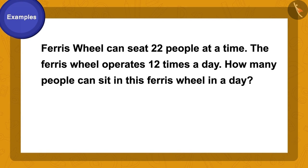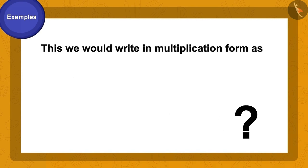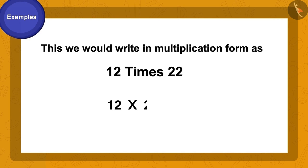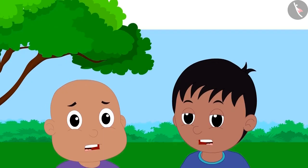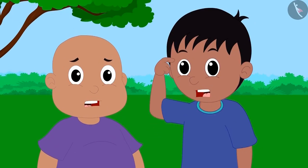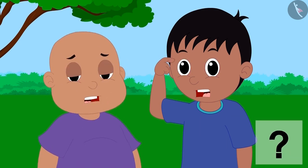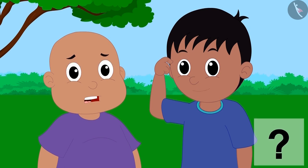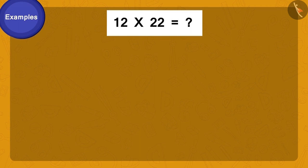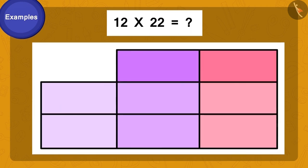At a time 22 people can sit in it, and the ferris wheel operates 12 times a day. How do we write this in the form of multiplication? 12 times 22. But we have only learned to multiply a two-digit number with a single digit number. How do we calculate this now? Come, let us learn to multiply two two-digit numbers.